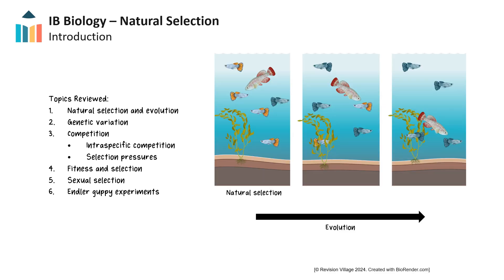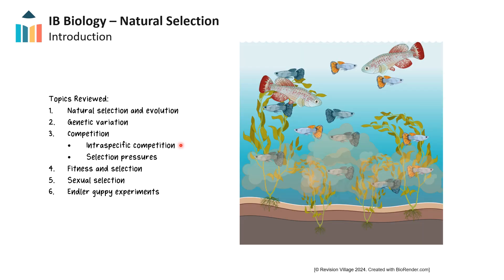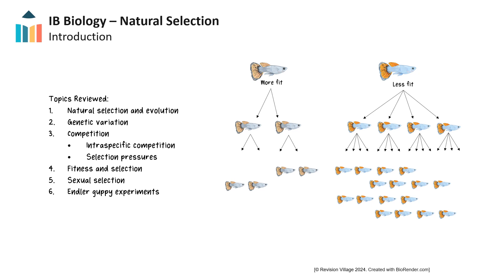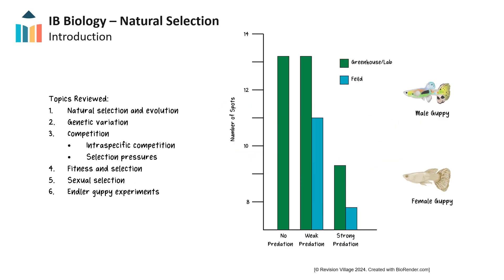In this video, we'll start with an overview of natural selection and its relationship to evolution. We'll take a look at the conditions necessary for natural selection to occur, including genetic variation in a population and competition, which includes intraspecific competition, as well as density-dependent and independent selection pressures. We'll take a look at fitness and selection, including sexual selection. Finally, we'll see how John Endler's experiments explored the relationship between sexual selection and survival in guppies.